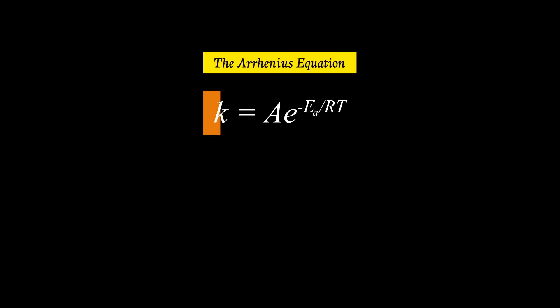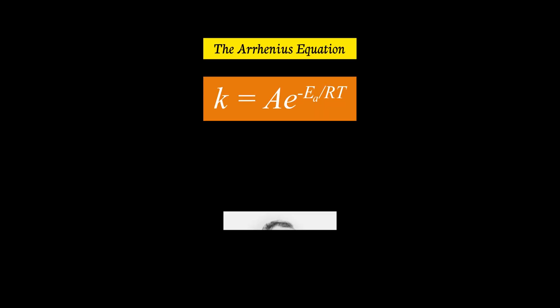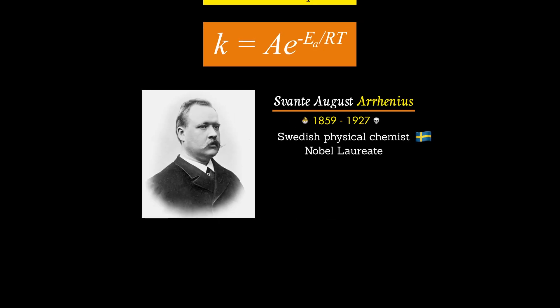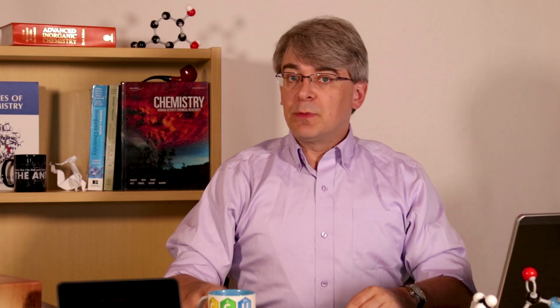This temperature dependence of reaction rates is a very important concept in chemical kinetics. We can model exactly how the reaction rate will change as the temperature moves up and down using a mathematical relationship called the Arrhenius equation. Now we have a theoretical model that explains reaction rates: the more frequent and the more energetic the collisions between molecules, the faster the reaction goes.